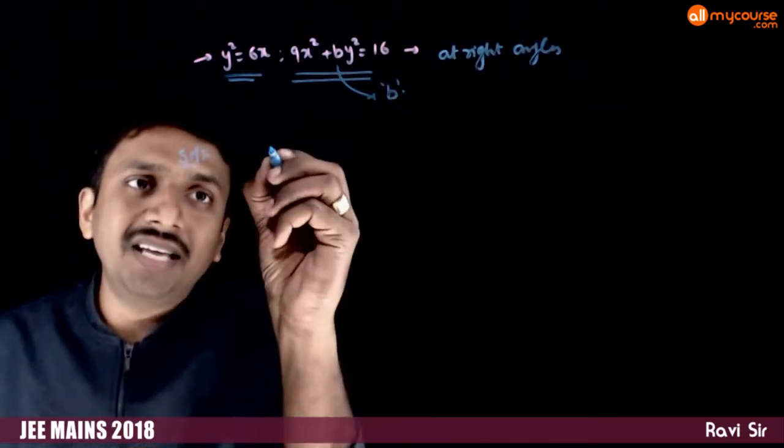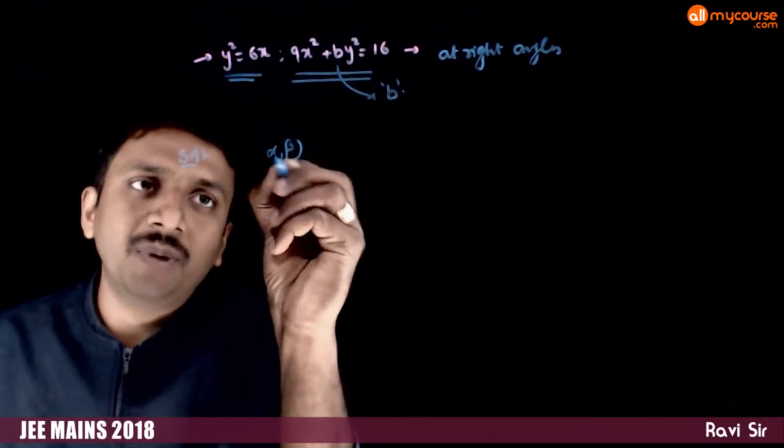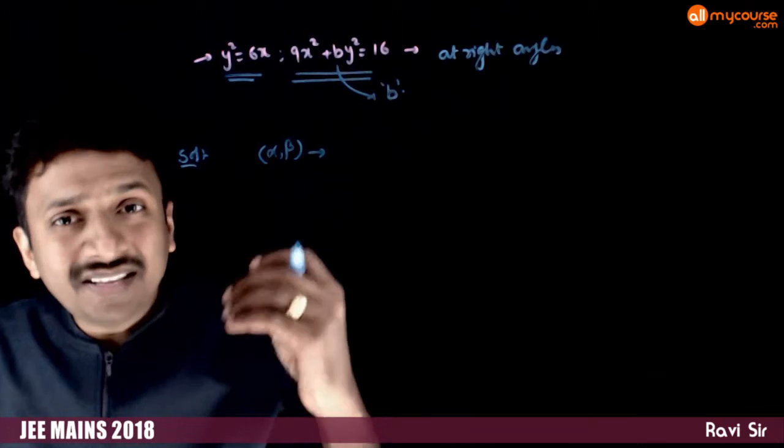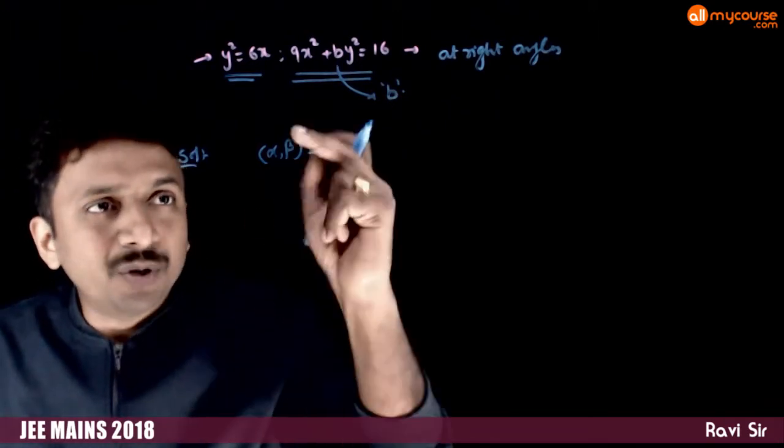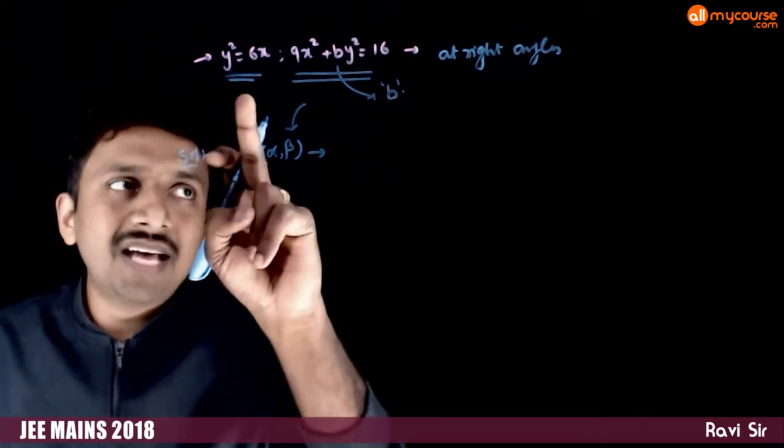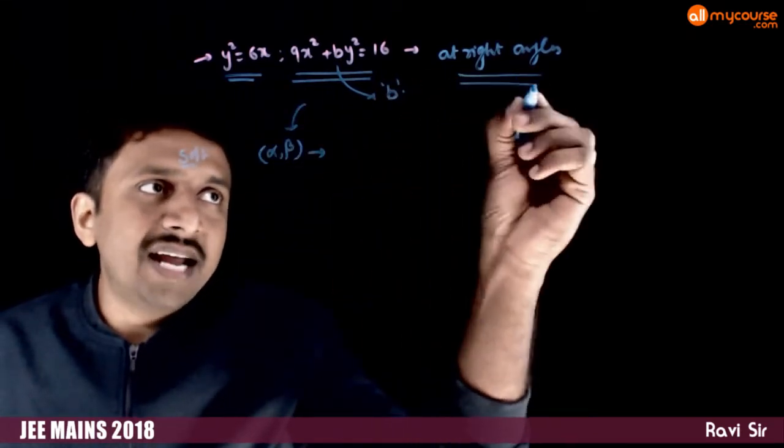Let us say that they intersect each other at the point alpha comma beta. If you are asked to find the angle between the curves, you would be required to find this alpha comma beta. But this time, the angle is given as 90 degrees.